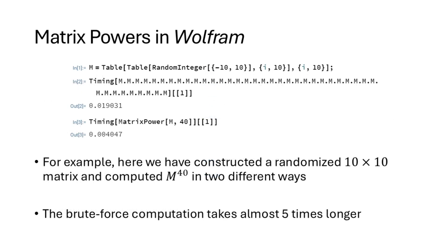Here I've computed a random 10 by 10 matrix containing random numbers between −10 and 10, and I'm computing M to the 40th power in two ways. The first way writes m.m.m...m 40 times; the second uses the matrix power command. Using the timing command, the matrix power command is about five times faster — due to efficiencies we'll learn about later in the course.